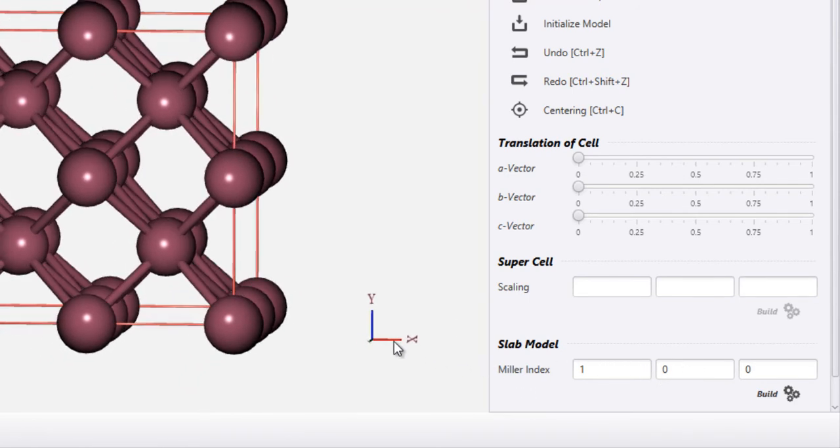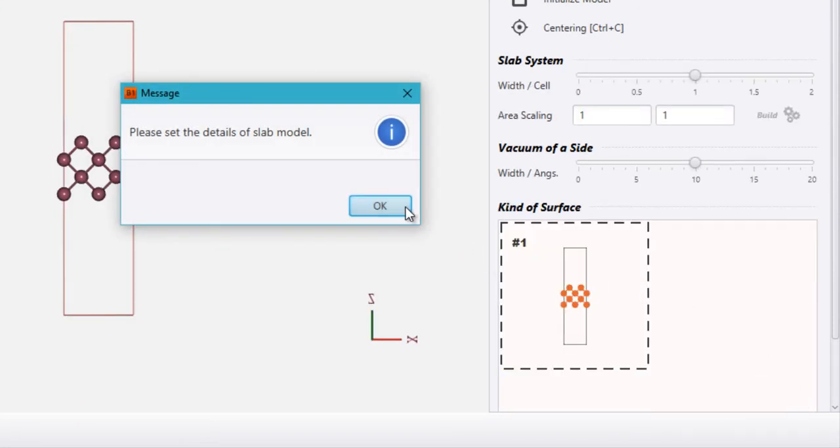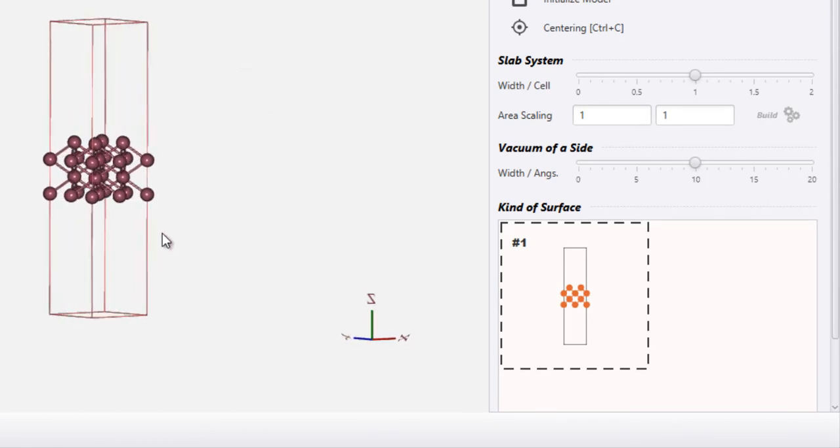So this time we'll create a monolayer which would be this part of this unit cell. So 1, 0, 0 that is intersecting the x-axis at 1 and parallel to z and y-axis. So this side whole thing, then click on build and here you have that part of this monolayer.